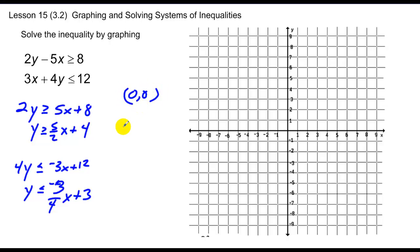So we take sample points of 0, 0 in both cases. We get 0 greater than or equal to 4, which is false. In this case, we take 0, 0, we get 0 less than or equal to 3, which is true. So that's going to tell us our shading.